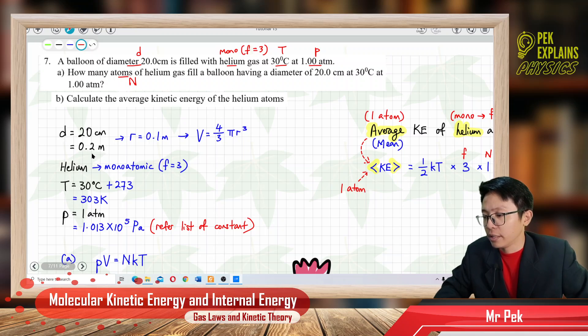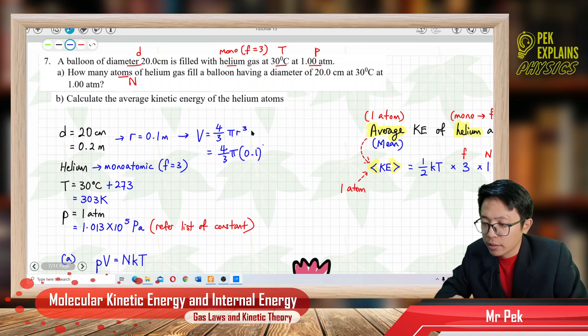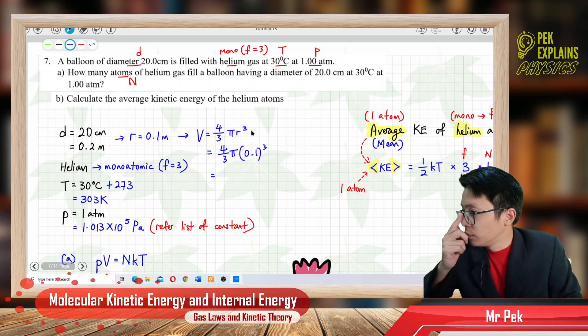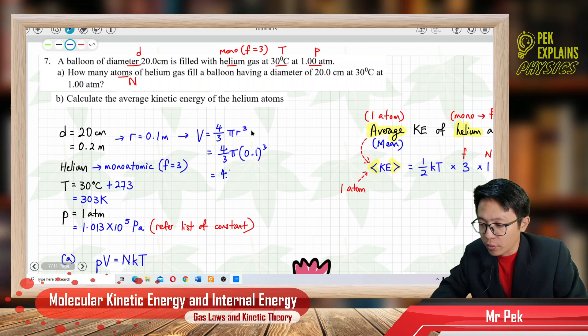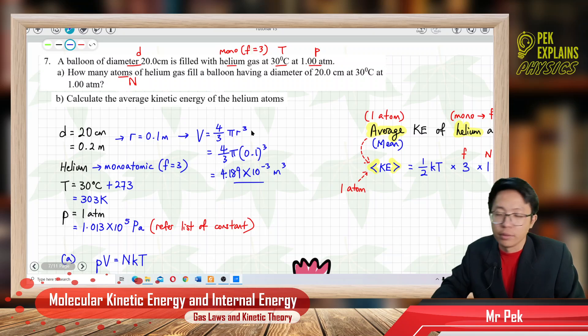Change to meter already, we get the radius which is divided by 2, 0.1 meter. So we can find the volume, which is 4 over 3 pi r cube. What is the volume you get? 4.189 exponent negative 3 meter cube, already in SI unit.